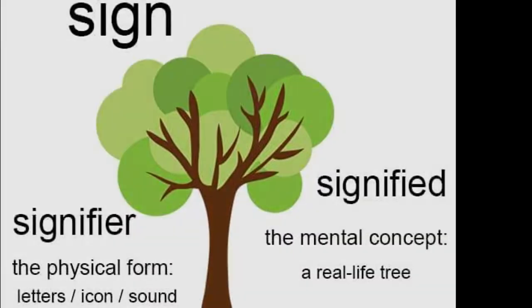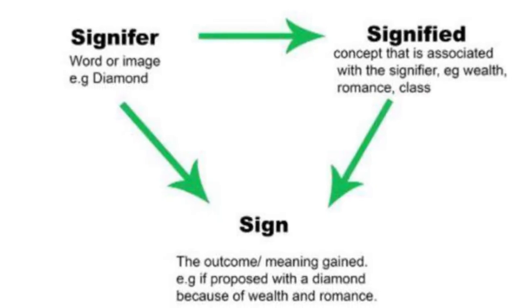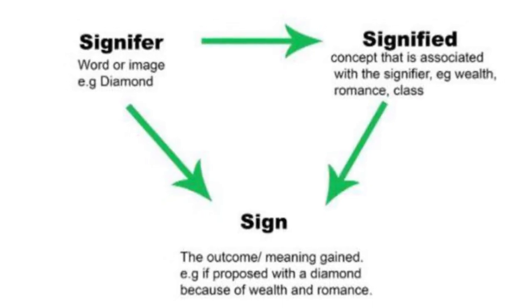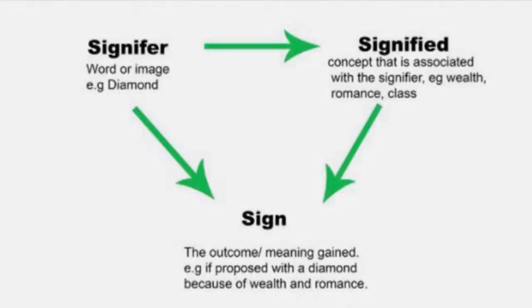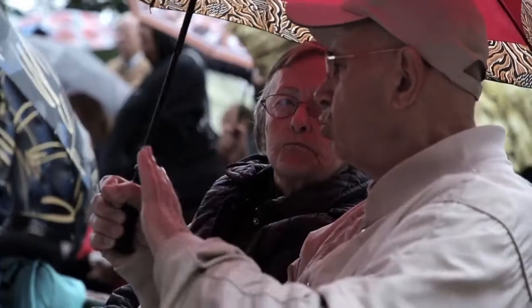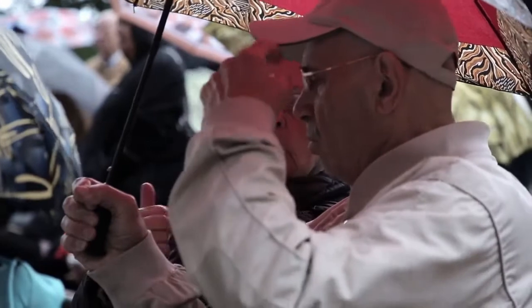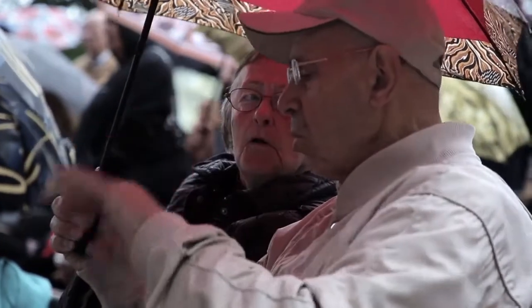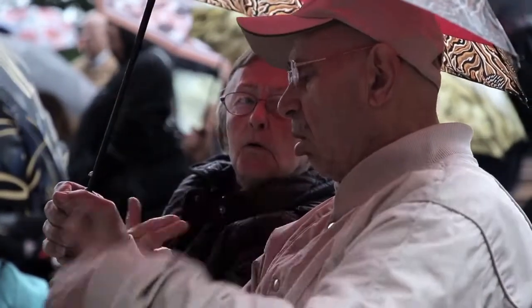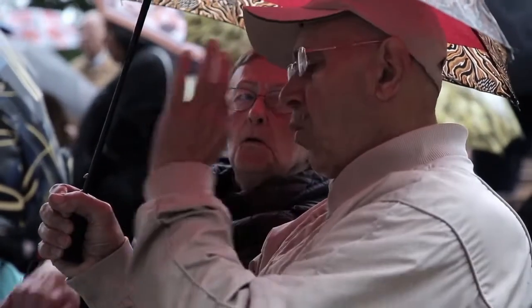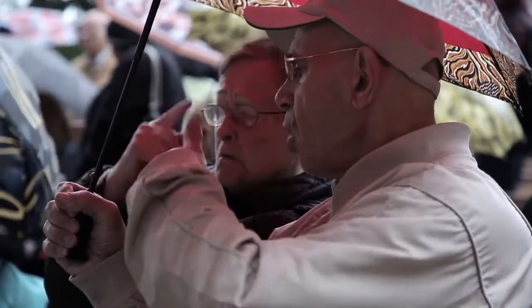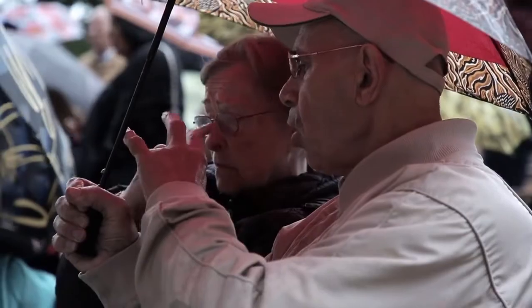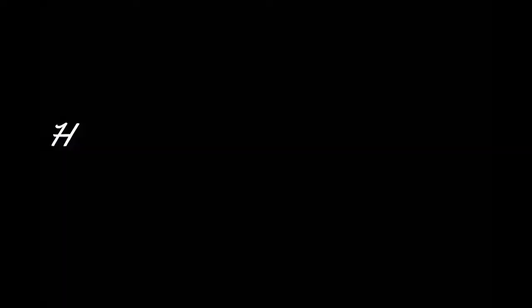De Saussure argues further that the relationship between the signifier and the signified is arbitrary. The sign, the signifier, and the signified are the core concepts of Ferdinand de Saussure's structuralism.